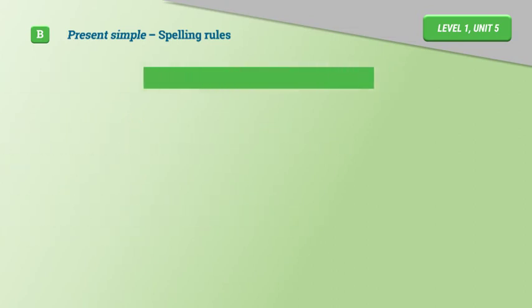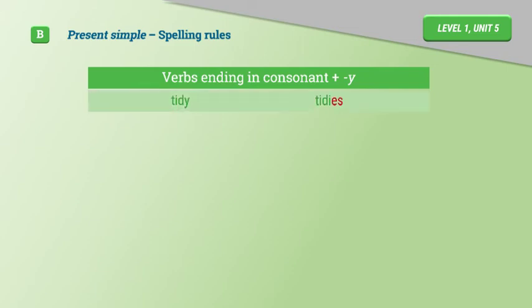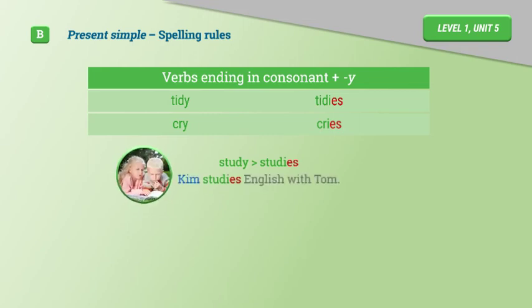Verbs ending in consonant plus Y. Tidy, Tidies. Cry, Cries. Study, Studies. Kim studies English with Tom. Fly, Flies. My parrot flies.